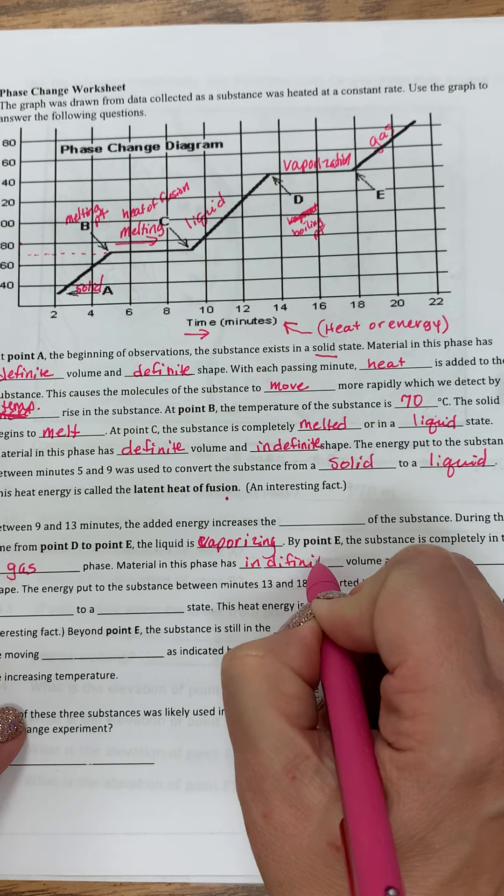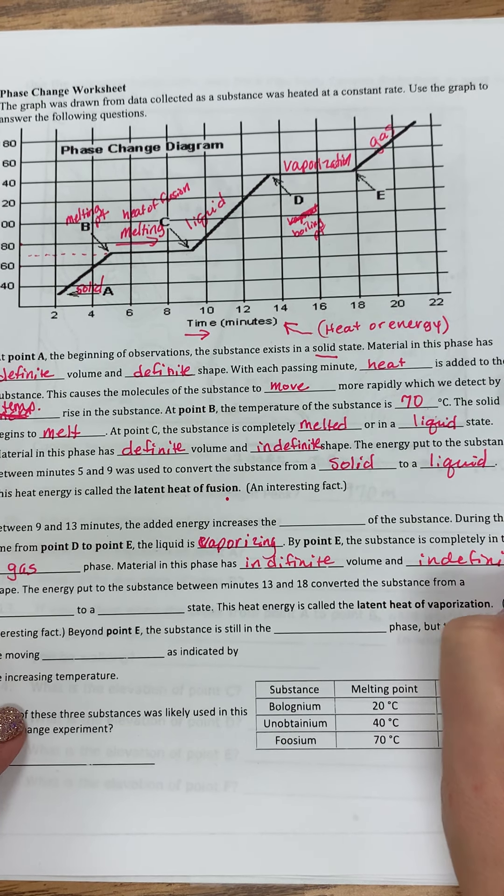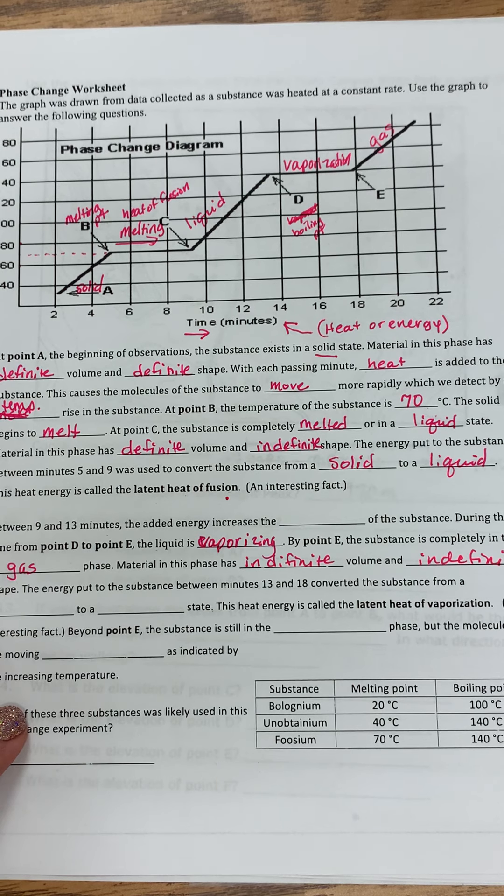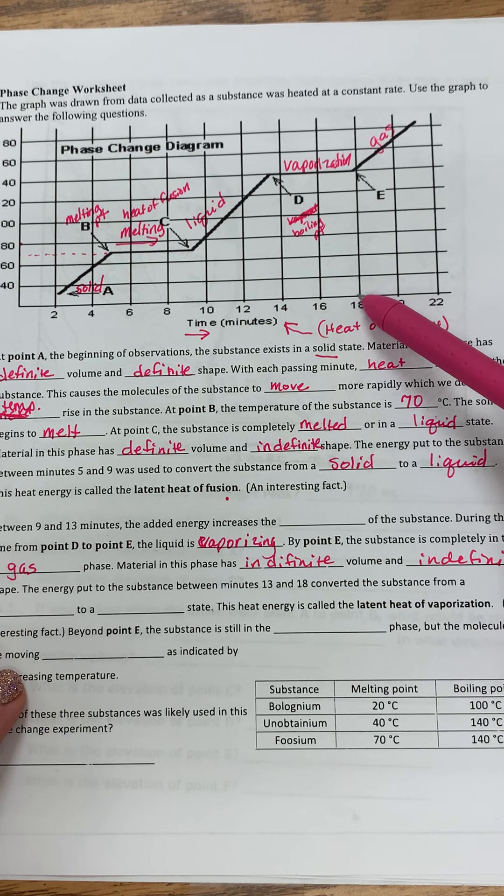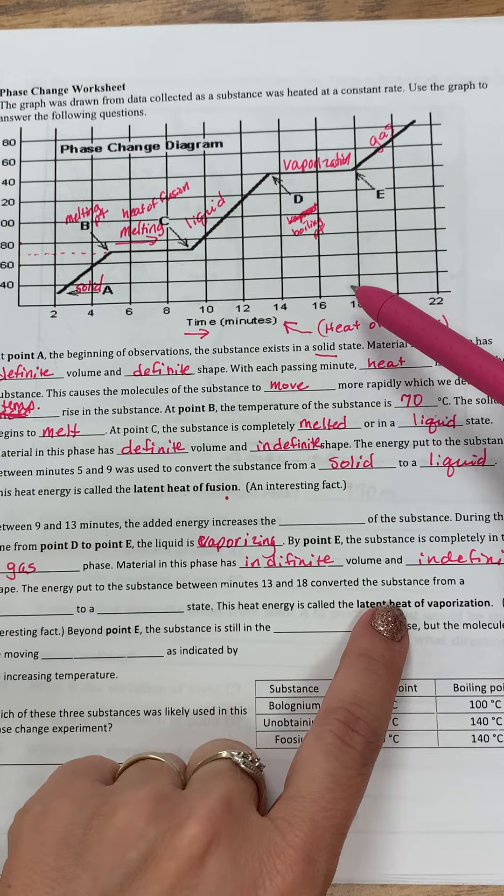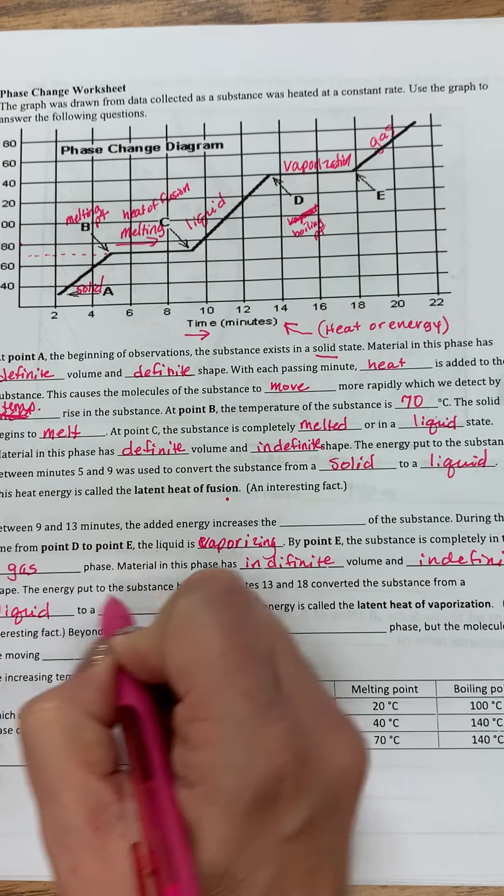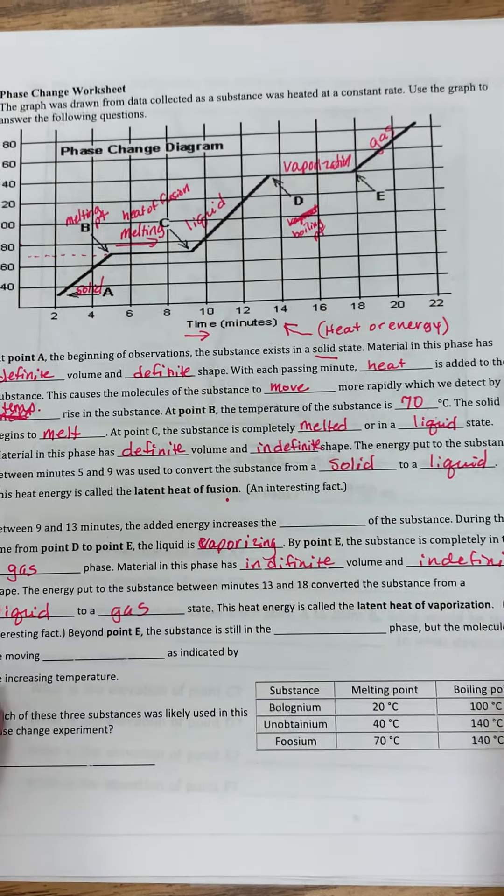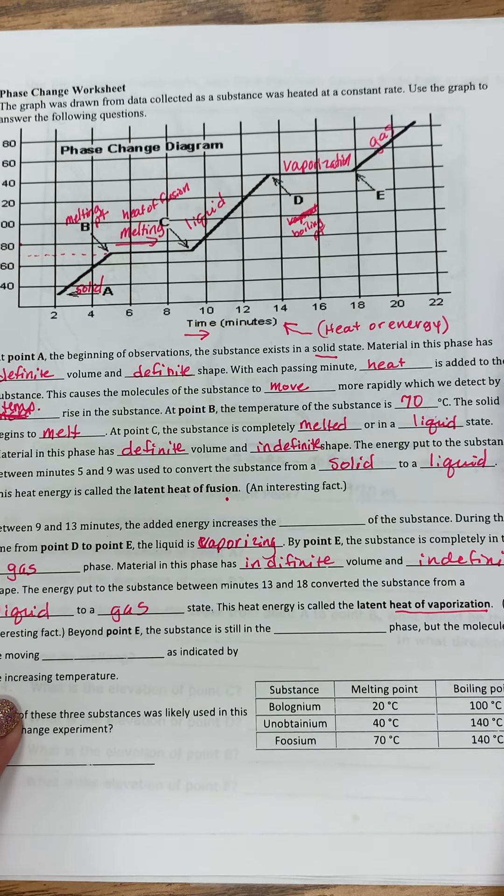So material in this phase has indefinite volume and indefinite shape. The energy put to the substance between 13, which is right here, and point 18 converts the substance from a liquid to a gas.